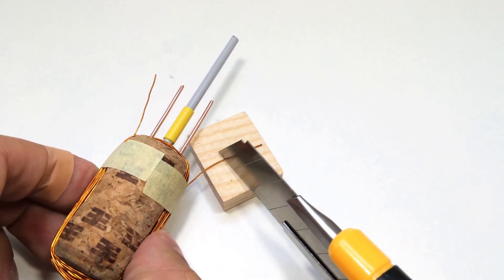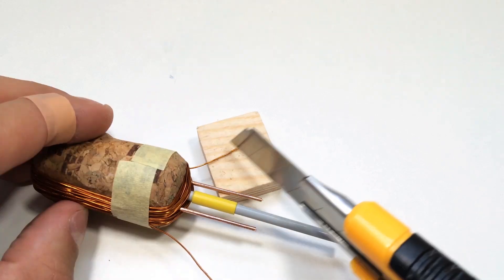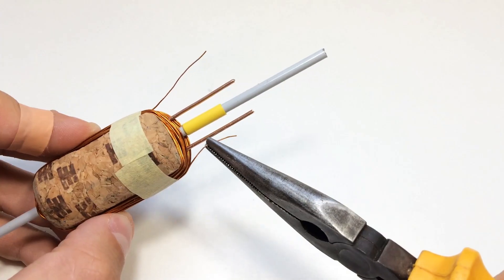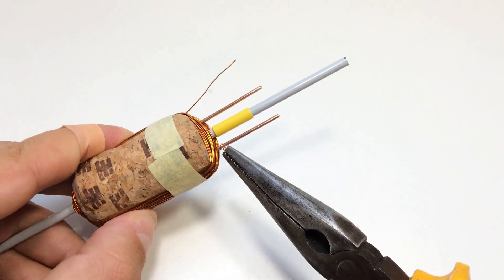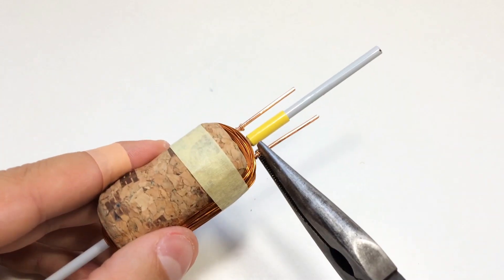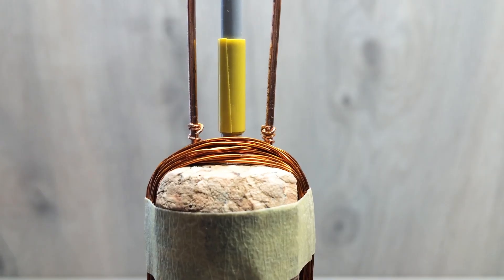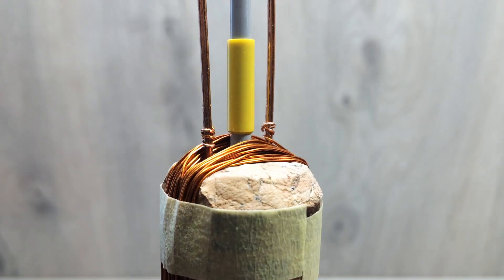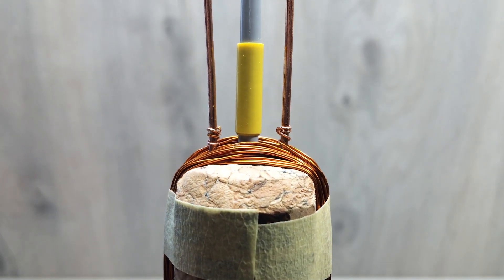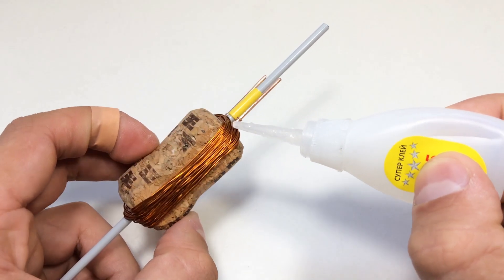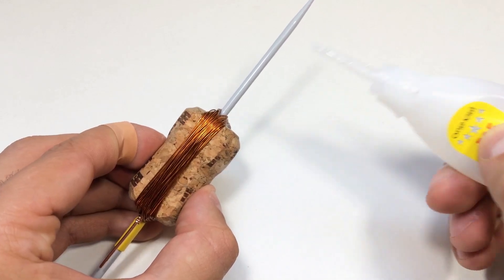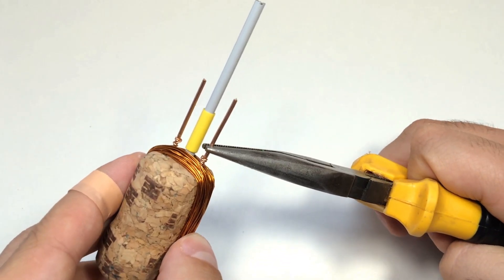Then we remove the insulation from the terminals of the winding and connect the wires to the contacts. Then we fix the winding with super glue, and we bend the contacts into the following shape.